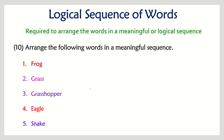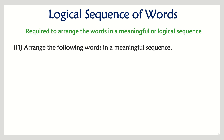Tenth question: frog, grass, grasshopper, eagle, and snake. This is basically a food chain sequence. It starts with grass — the grasshopper eats grass, then the frog eats the grasshopper, the snake eats the frog, and the snake is picked up by an eagle. That is the logical sequence.